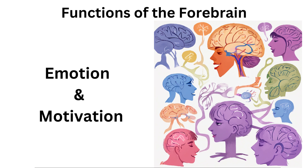The amygdala, part of the limbic system within the forebrain, plays a key role in processing emotions and generating emotional responses. The hypothalamus is involved in regulating emotions and motivation.